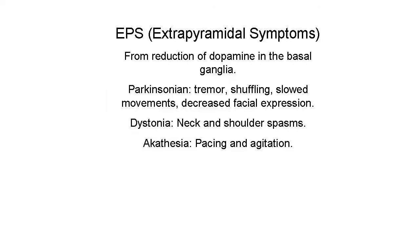Extrapyramidal symptoms include Parkinsonian symptoms — a tremor, shuffling gait, slowed movements, decreased facial expression — as well as dystonia, neck and shoulder spasms, and akathisia, which is pacing and agitation. The akathisia is easy to mistake for a primary psychotic feature, so it's important to know that it can be a medication side effect.